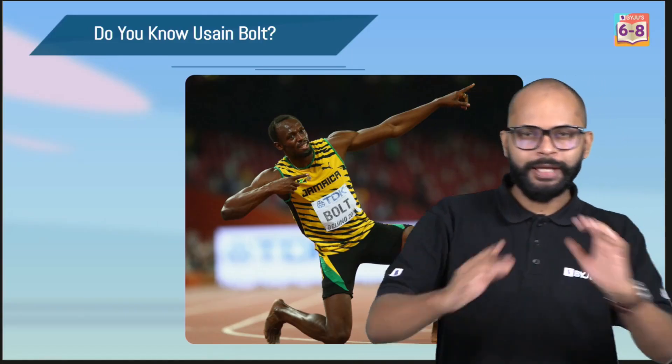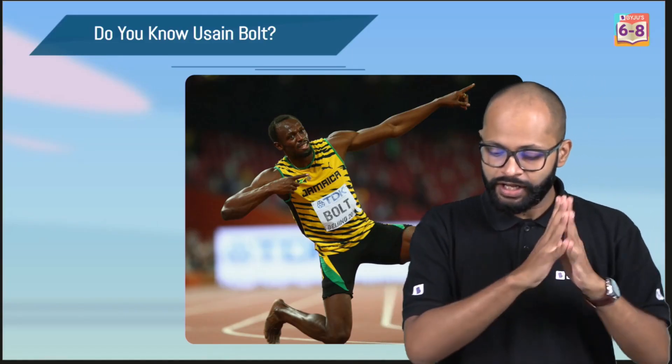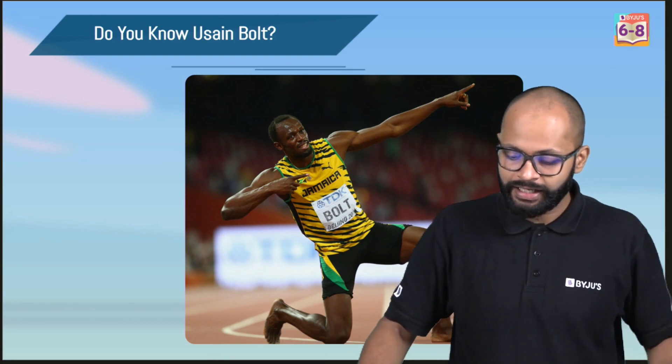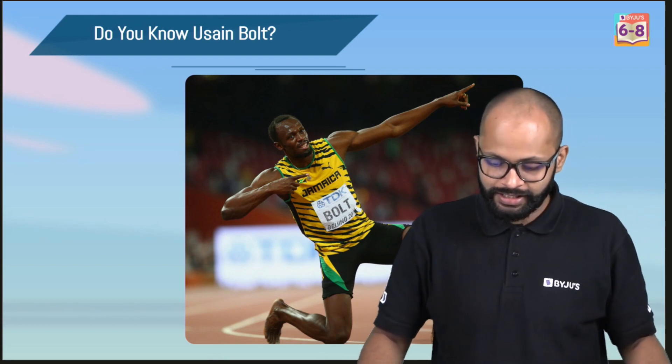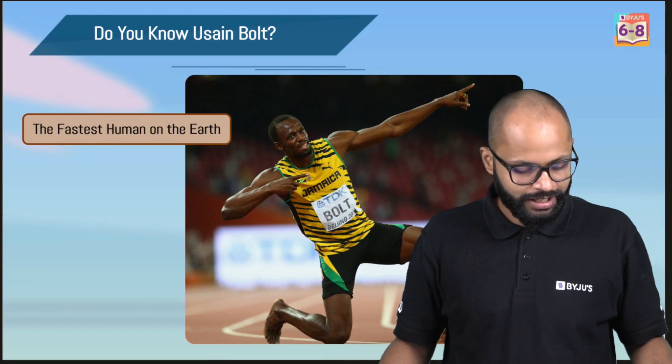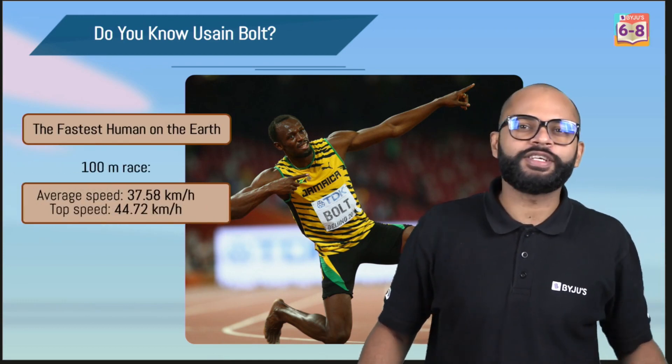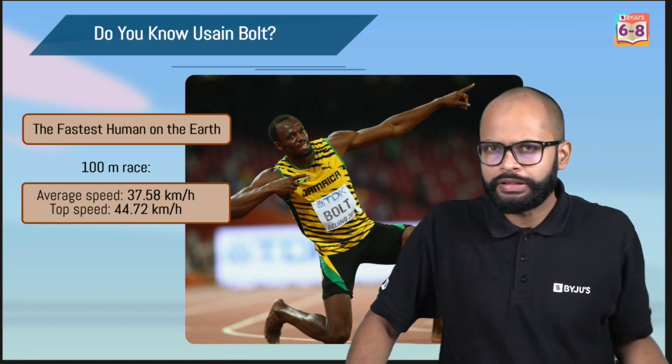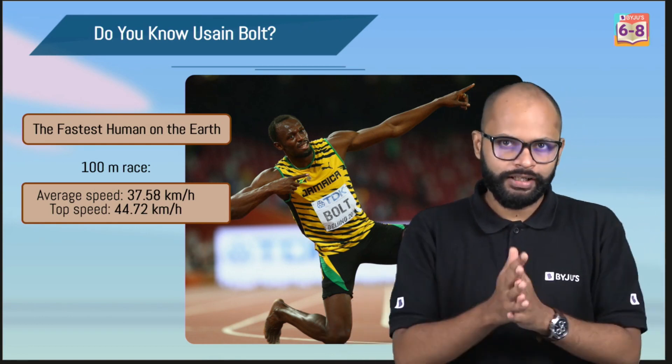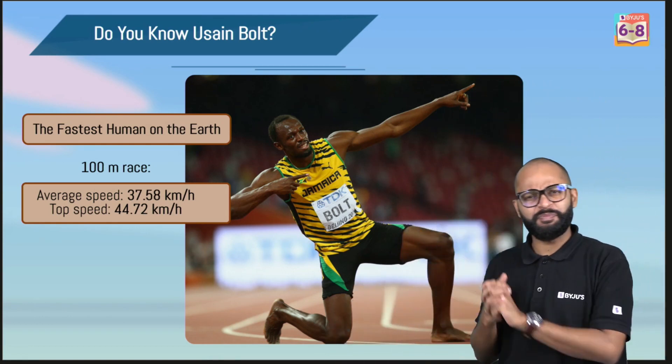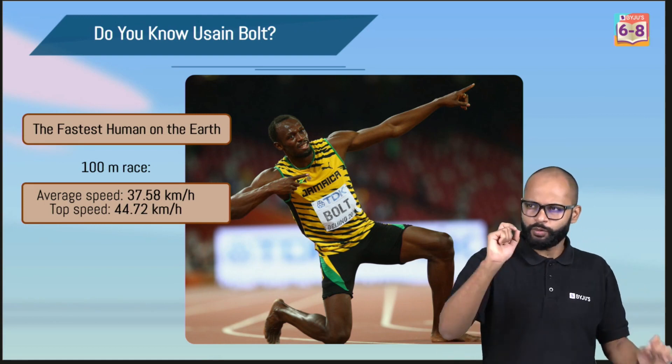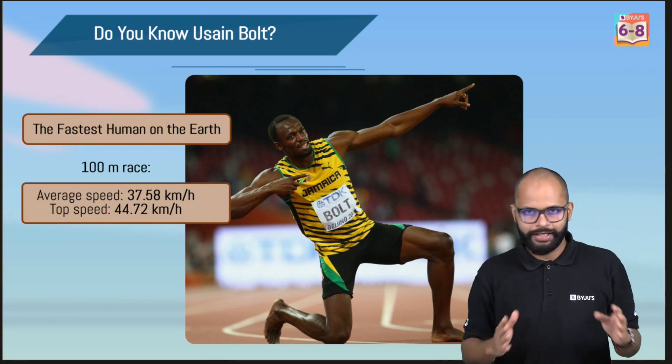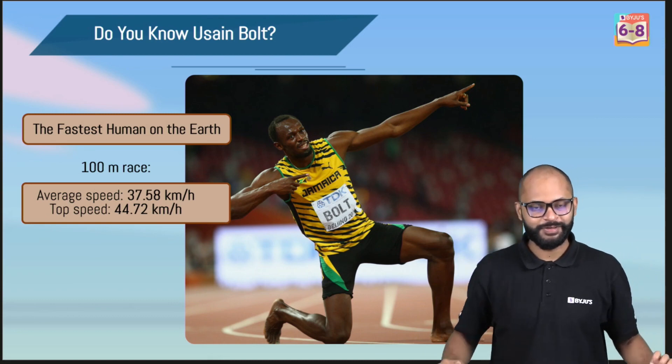For people who don't know about Usain Bolt, he is a Jamaican sprinter, Jamaican athlete who holds a record for being the fastest man on earth. In 2009, he set his record for a 100 meter race and his average speed was 37.58 km per hour and his top speed was 44.72 km per hour. This was a record and still a record. Look at the speed, it's insane. If you try calculating your time for a 100 meter race, you will get to know how fast he is.